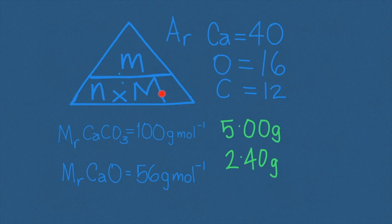Using this information and these relationships for converting moles to mass and mass to moles, we can determine the number of moles of calcium carbonate consumed and the number of moles of calcium oxide produced. Using these masses and the relative formula masses for each compound, we can determine the number of moles.